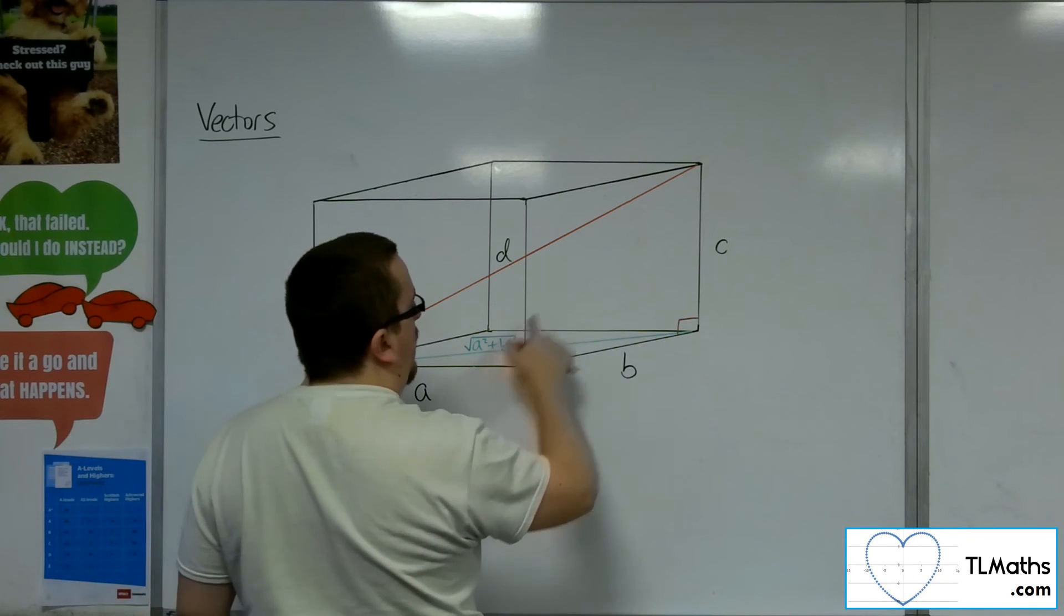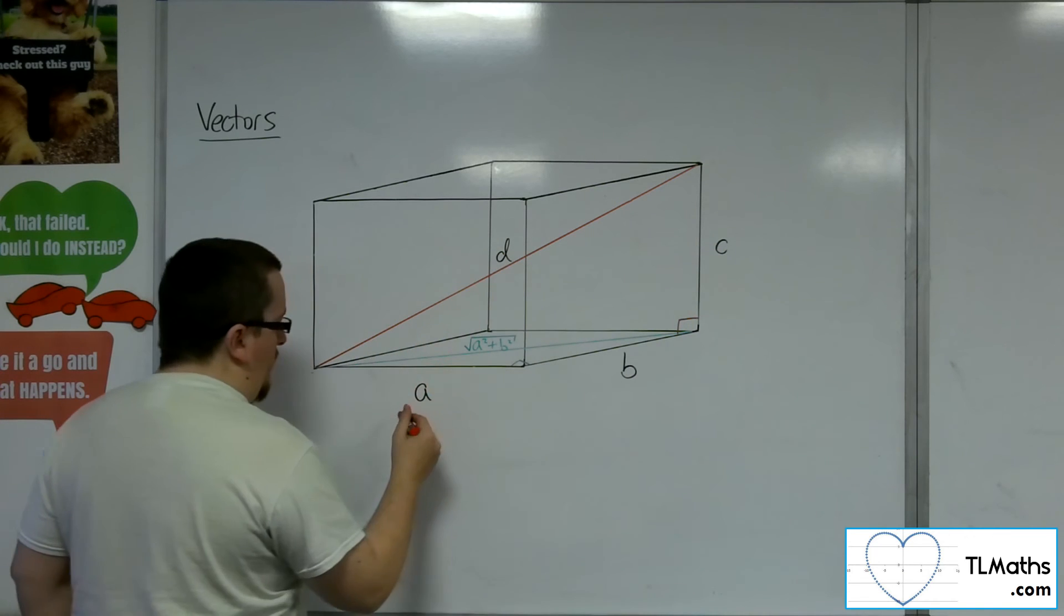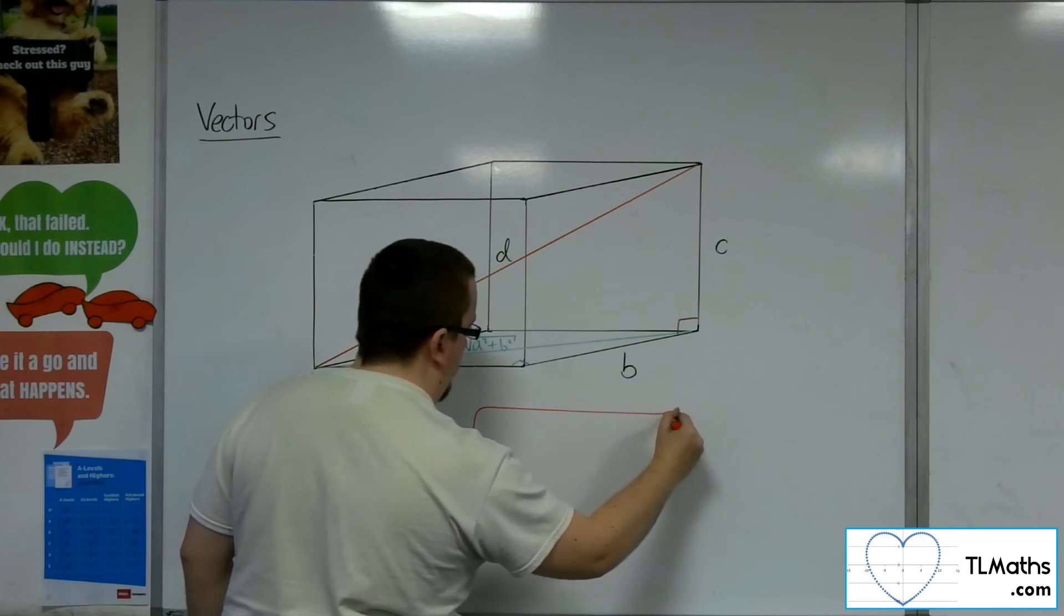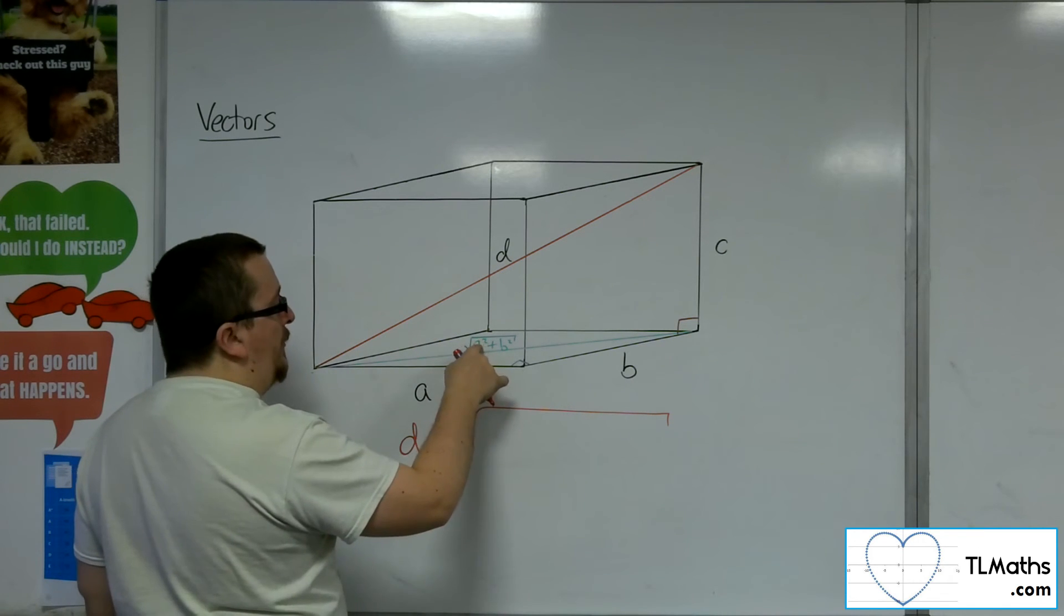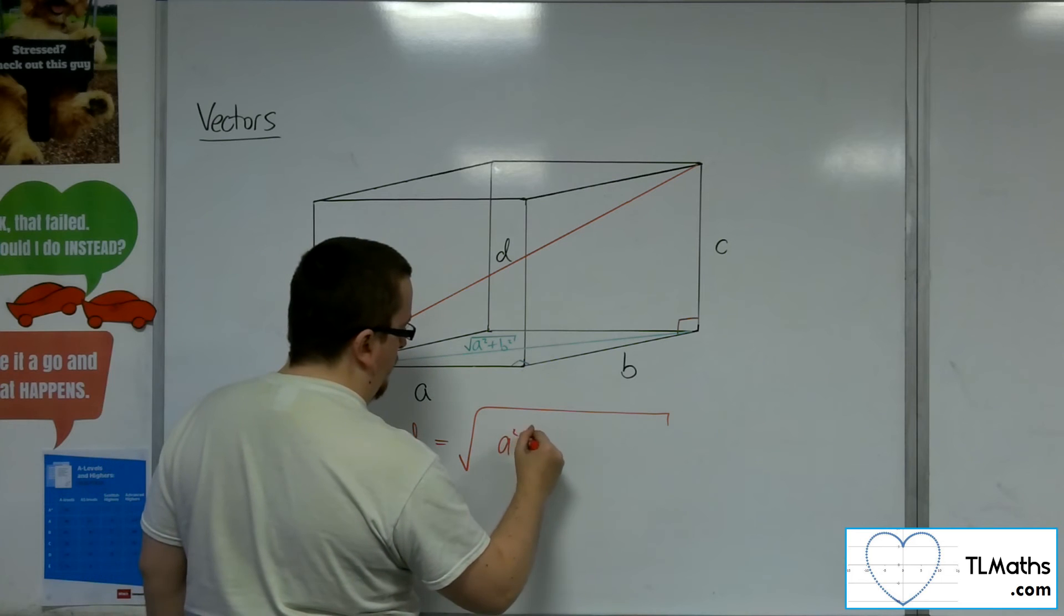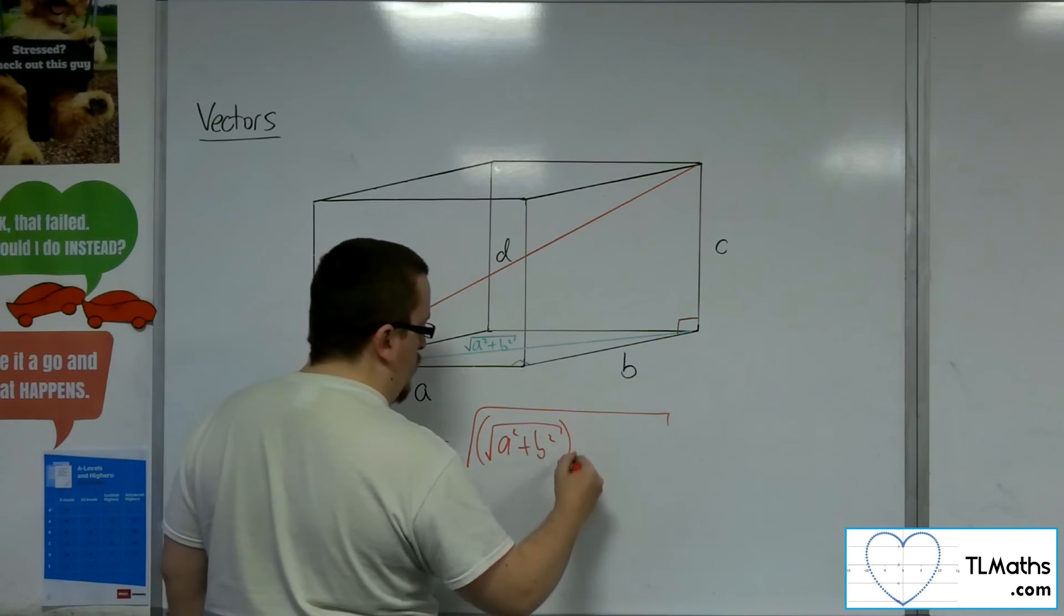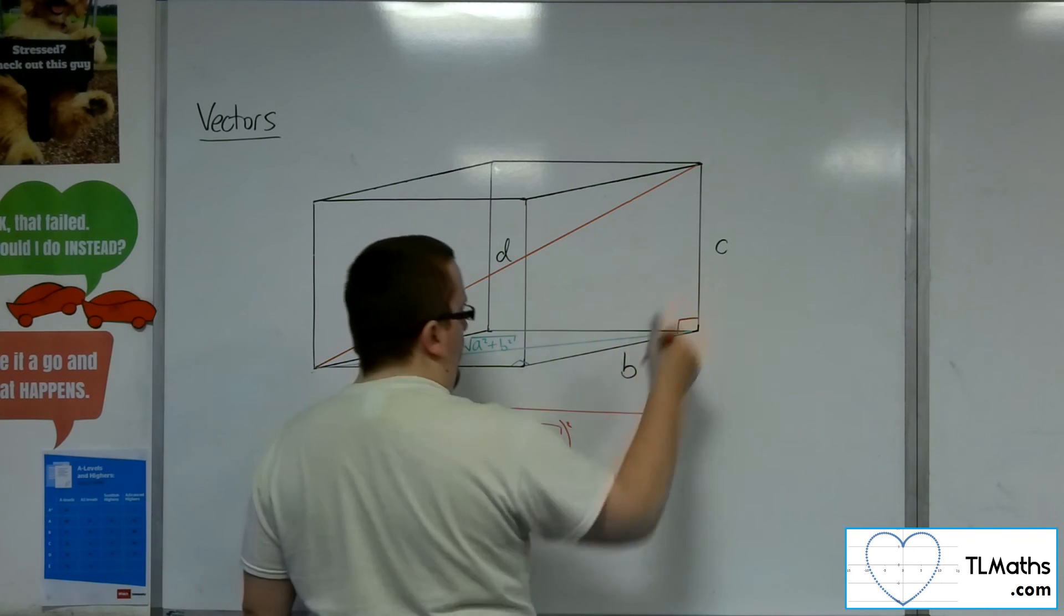I've got one side there. I've got one side there. So that means that D is equal to the square root of this side squared. So that side squared plus that side squared.